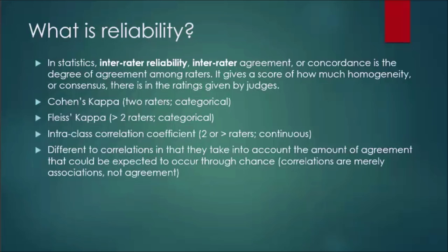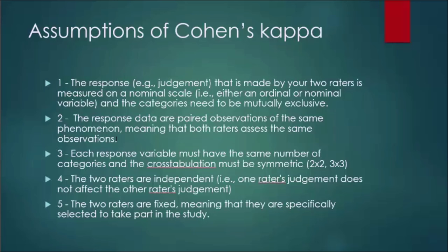Starting off with Cohen's Kappa and some assumptions. There are five assumptions that need to be met in order to use Cohen's Kappa. The first one is the response — i.e., the judgment that is made by your two raters — is measured on a nominal scale, either ordinal or nominal variable, and the categories need to be mutually exclusive.